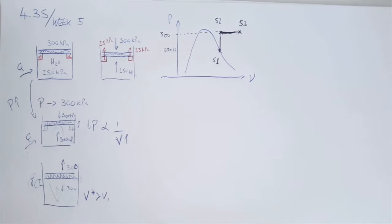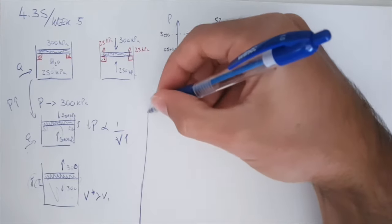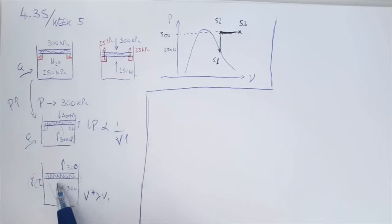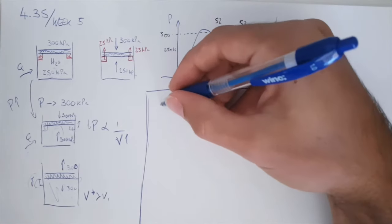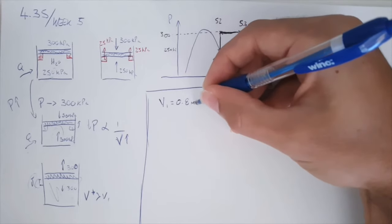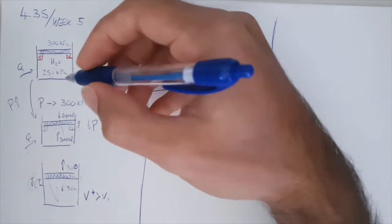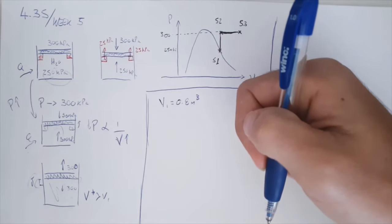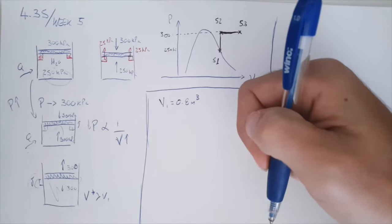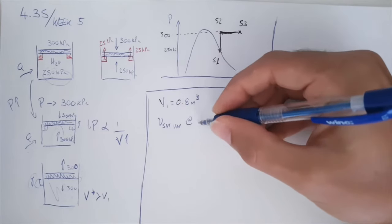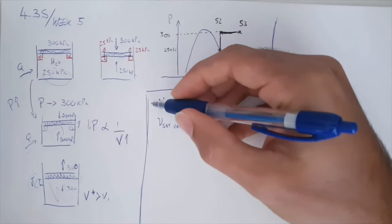Now let's start doing some math. The only thing constant throughout this whole process is the mass — there's no water going in or out of the system. If we can find the mass, that will be one thing constant throughout. We can find it because V1 has been given as 0.8 meters cubed, and we can find the specific volume from the saturated vapor table at 250 kilopascals. With specific volume and total volume, we can find the mass.